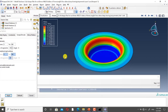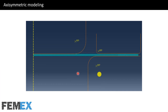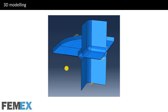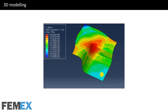In axisymmetric modeling you must use four elements or more than four elements through the thickness direction of the sheet. This is very important for having exact and accurate stress field. Here I have modeled a deep drawing process in the 3D space. In this process there are two symmetric planes, so we can model a quarter of the process and there is no need for complete modeling. And this is the stress field of this simulation.